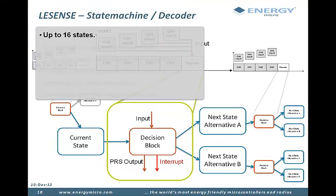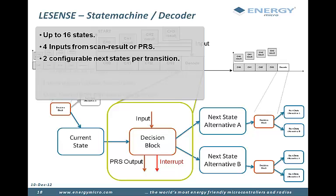A summary of the main decoder features are: up to 16 states can be configured. It can use up to four input bits from either the channel scan results or the peripheral reflex system. There are two configurable next states per transition.